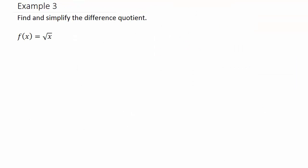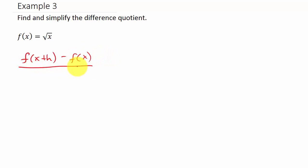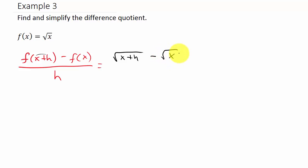Let's take a look at one more example. So I've got f of x plus h minus f of x, all over h. For f of x plus h, I take x plus h and put it in for x — so that's the square root of x plus h. Minus f of x, which is the square root of x. All over h.